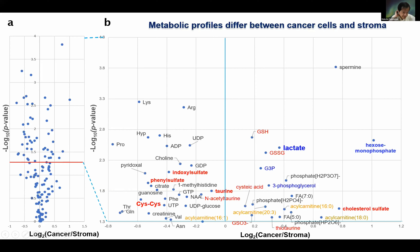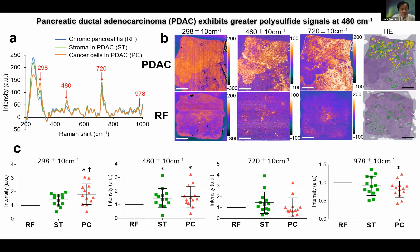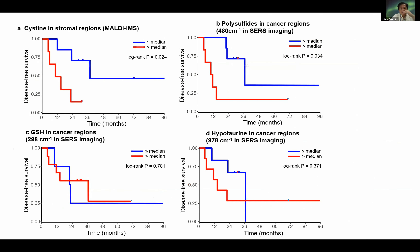We wondered what the role of cancer stroma is in pancreatic cancer. Once again, we used Raman imaging to visualize polysulfide, since polysulfide is a main product of the trans-sulfuration pathway and sulfated metabolism. In PDAC—pancreatic ductal adenocarcinoma—a huge polysulfide signal is displayed versus the control. The Kaplan-Meier plot indicates that the higher polysulfide group shows poor prognosis.